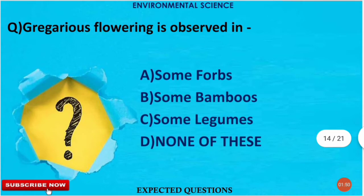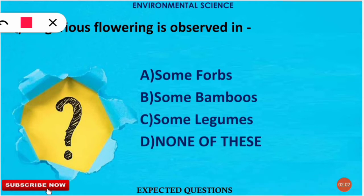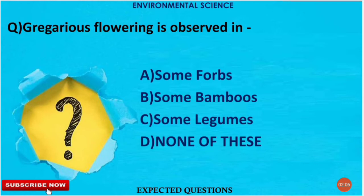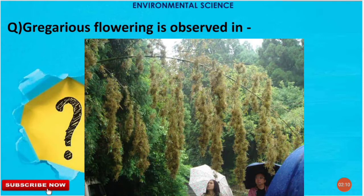The next question is: gregarious flowering is observed in which of the following? The correct option is B — bamboo. Gregarious flowering means massive synchronized flowering, where all plants flower at once simultaneously. This phenomenon is called gregarious flowering.